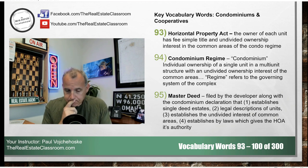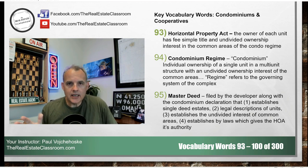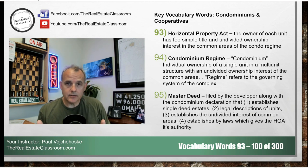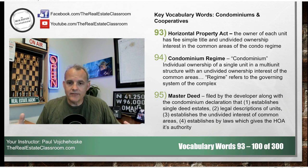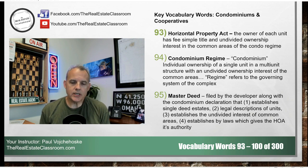Number two, it provides legal descriptions of each of the individual units along with the condominium regime as a whole. Number three, it establishes an undivided interest in the common areas — you have fee simple ownership in your individual unit, but undivided ownership of the common areas. Number four, it establishes bylaws, which give the homeowners association its authority.